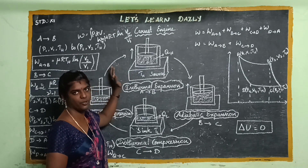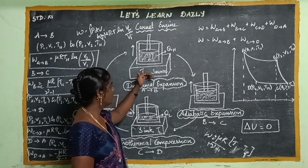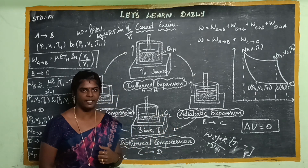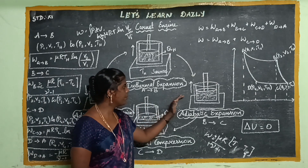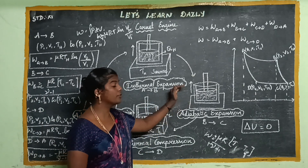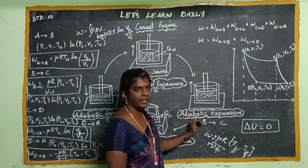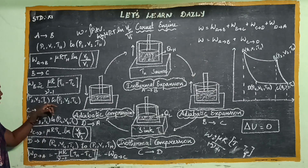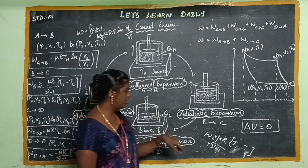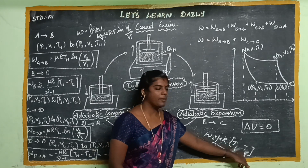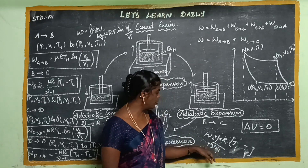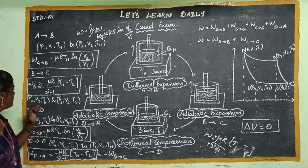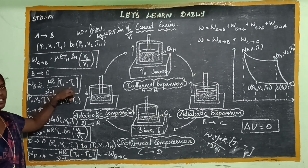For step B to C, the working substance is moved to the insulating stand. Since there is no heat exchange, this is an adiabatic process — specifically adiabatic expansion. The initial state is P2, V2, TH and the final state is P3, V3, TL, going from high to low temperature. The work done for adiabatic expansion is W = μR/(γ−1) · (TH − TL).